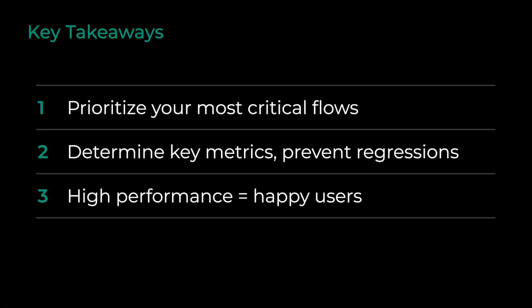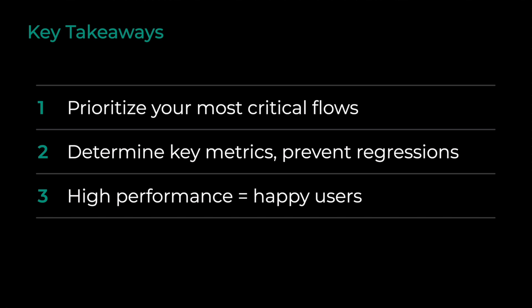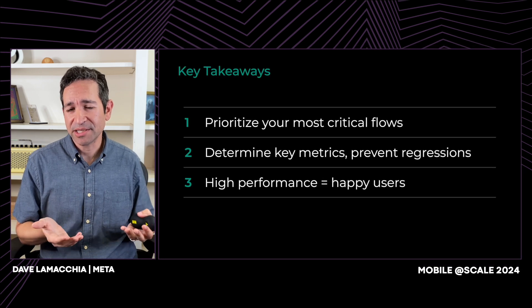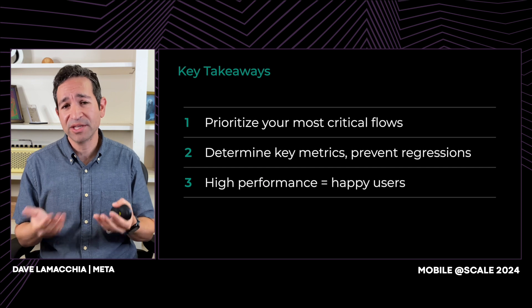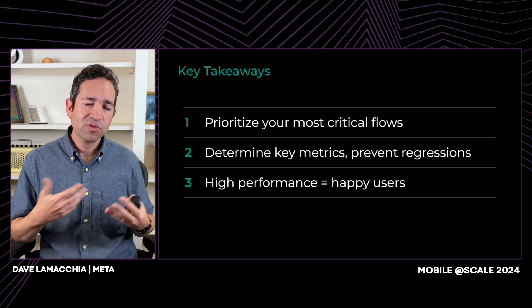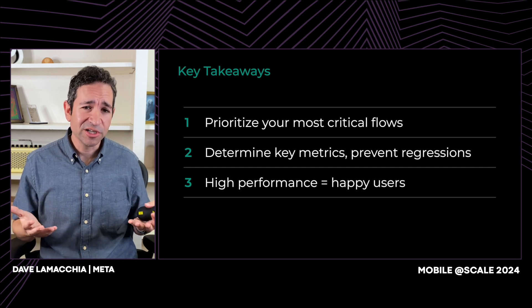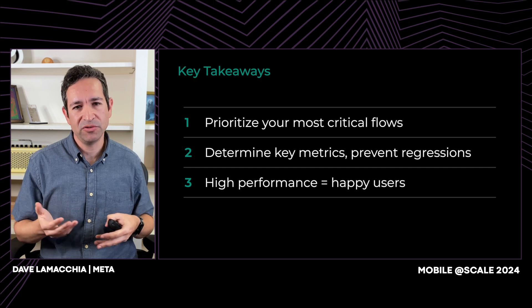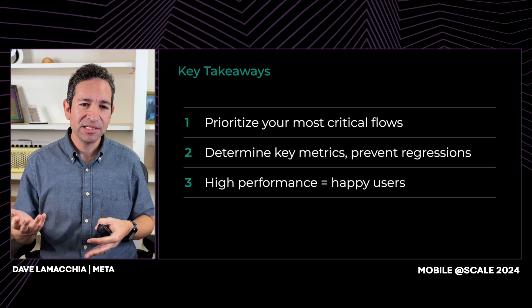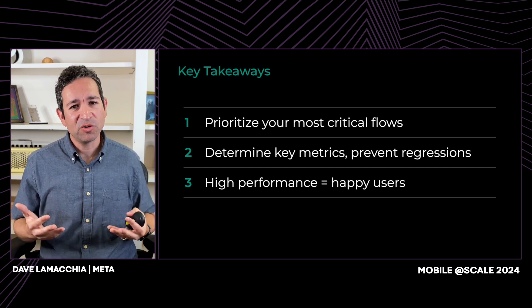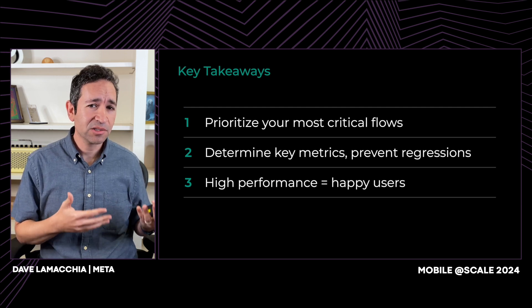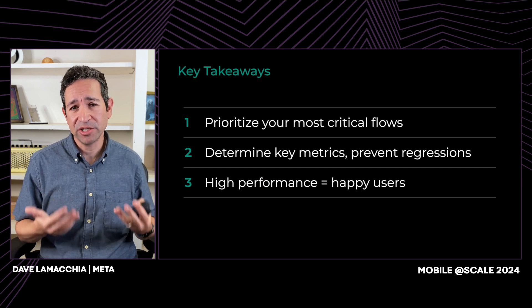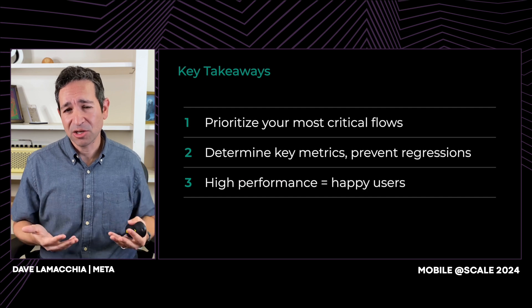In your own apps, think about what your critical flows are — for Threads, those were app start, how content is delivered, how people post, and how people read content. Use techniques like boundary tests to understand overall impact before investing a lot of engineering resources. Performance is every engineer's job, especially on a large team, so make sure your metrics don't regress as you deliver new code. And prioritize sustaining a high level of performance — when you don't, the app just won't perform and people won't want to use it.